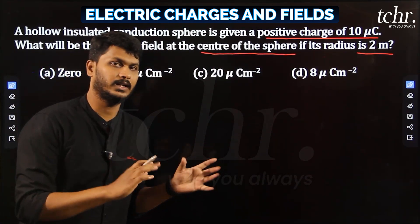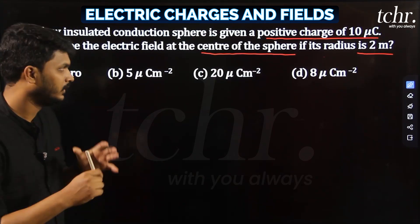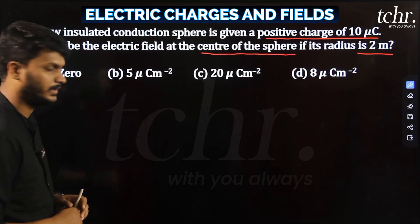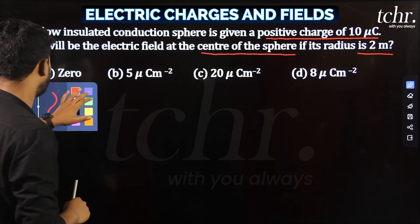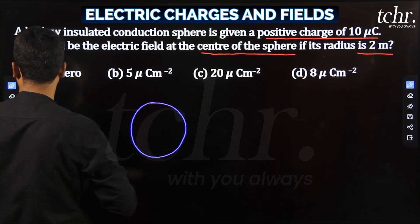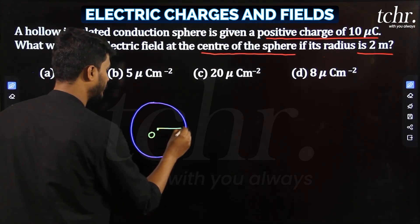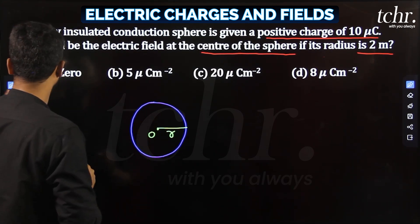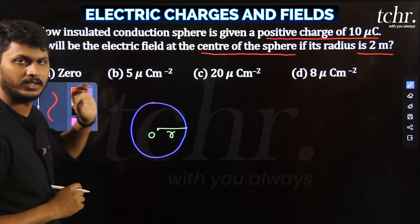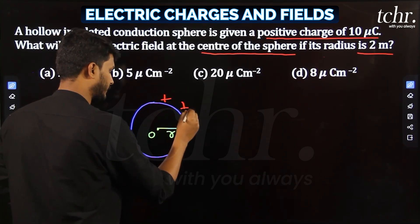First, this is a conducting sphere. I will consider that conducting sphere. On the sphere, charge is distributed uniformly, and the radius is R. We know that whenever charge is given to a conducting sphere, they distribute uniformly over the surface.